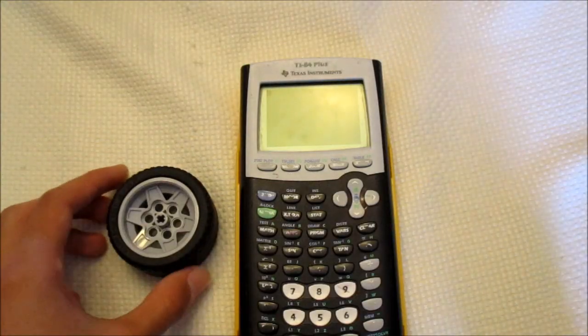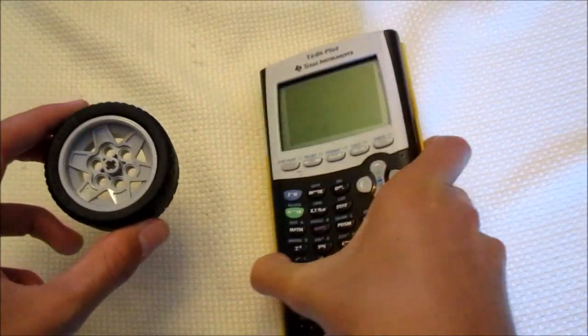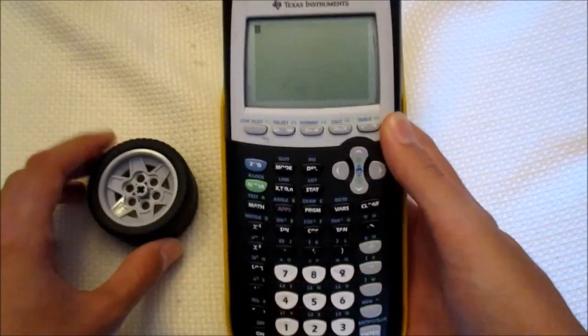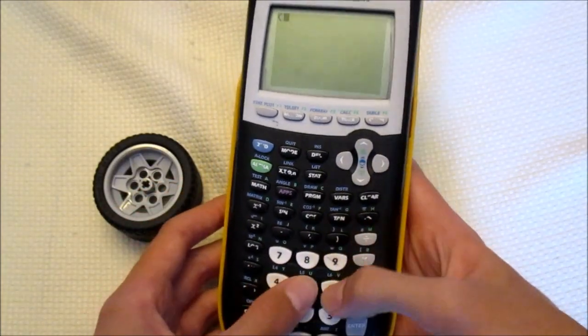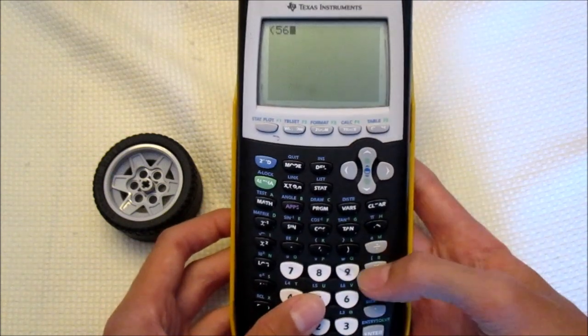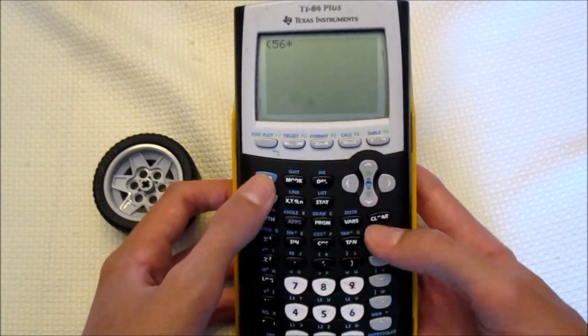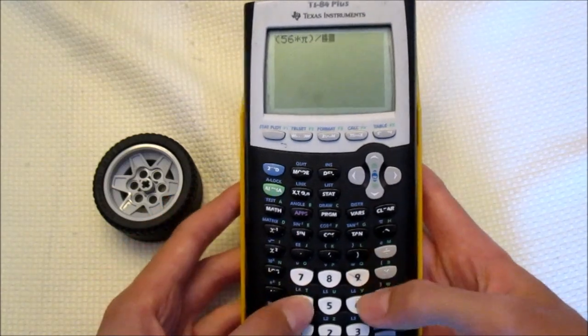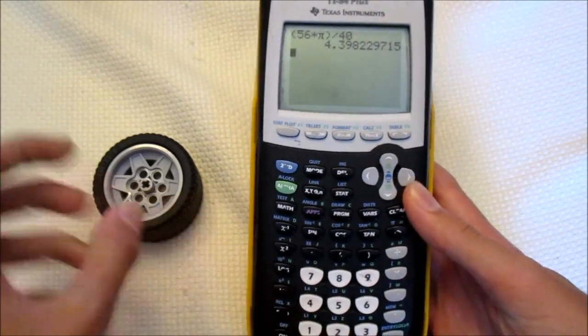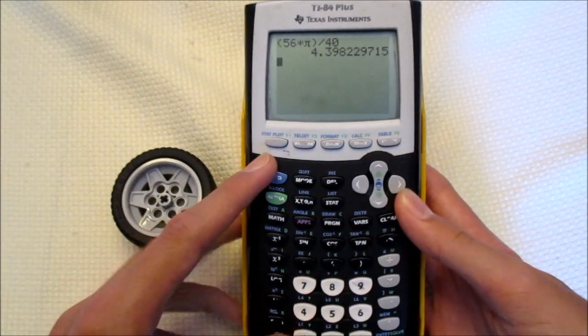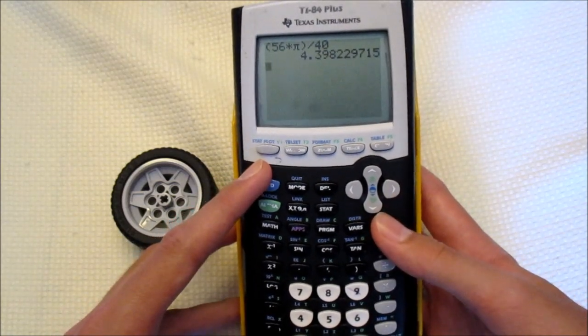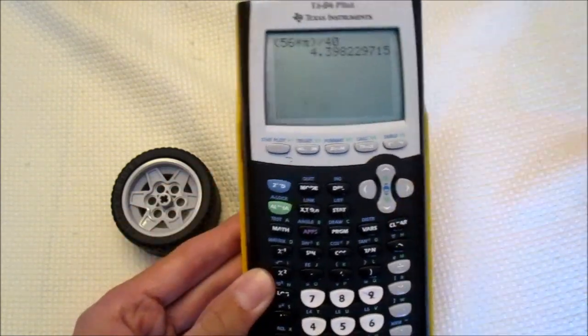So the next wheel is these medium-sized wheels, which are a very popular choice for FLL robots. They have a diameter of 56 millimeters. Now let's multiply this by pi, and then divide it by 40. And the slop distance for these medium wheels is 4.4 millimeters, exactly one millimeter more than these small wheels.